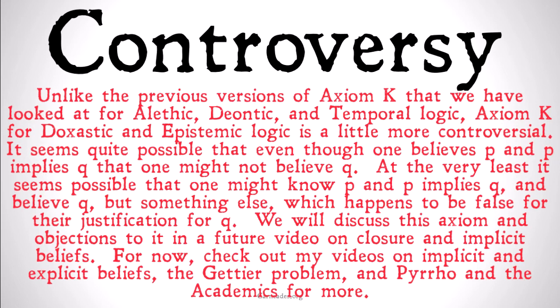Now, unlike some of the previous axiom K's which were generally pretty non-controversial, we're going to have a little bit more controversy in doxastic and epistemic logic here. It seems quite possible that even though one believes P and P implies Q, one might not believe Q. At the very least, it seems possible that one might know P and know P implies Q, and believe Q, but take something else — which happens to be false — for their justification for Q.